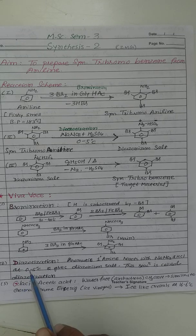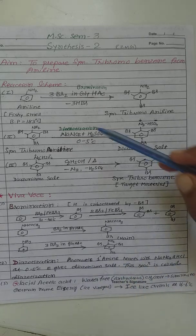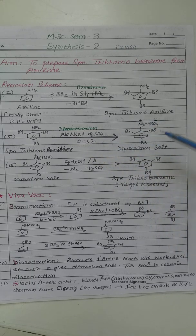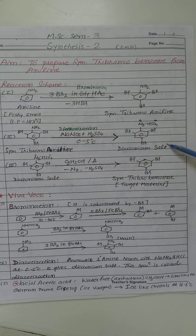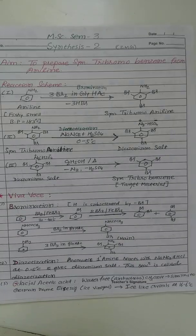Now second is what's the meaning of diazotization chemical reaction? Very simple. Aromatic primary amine reacts with sodium nitrite and sulfuric acid at 0 to 5 degree celsius temperature and we will get diazonium salt as a product. This chemical reaction is known as a diazotization chemical reaction.